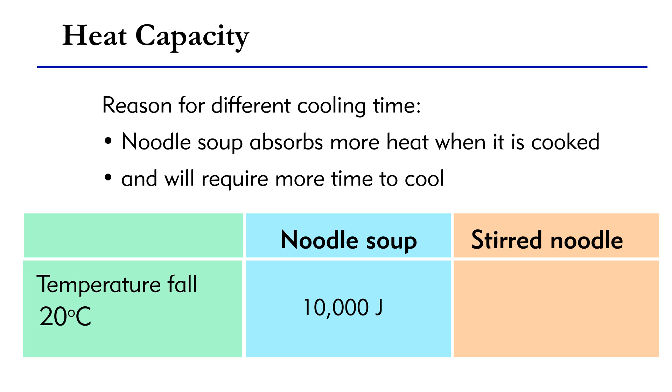Under the same condition, the stirred noodle will release only 1,000 Joules of energy. In this example, the noodle soup absorbs more internal energy than the stirred noodle when they are raised by the same temperature. In physics, we say that the noodle soup has a higher heat capacity than the stirred noodle.